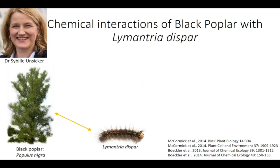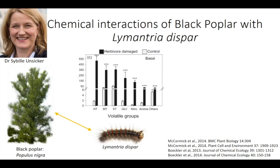For the tree's responses to herbivory, I am relying heavily on data published by Dr. Sibylle Unsicker and her group. She established poplar as an experimental system at the Max Planck Institute for Chemical Ecology in Jena and is the conceptual driving force behind most of the research on poplar conducted at this institute. Sibylle and her group showed that poplar emits high levels of volatiles from a number of different chemical classes in response to herbivory, and that some of these volatiles are very important in attracting natural enemies of the gypsy moth caterpillar.